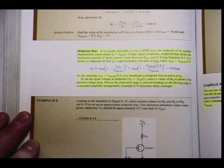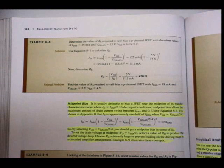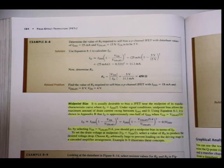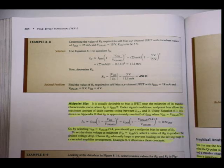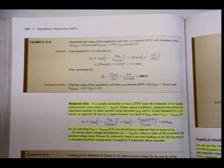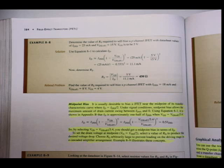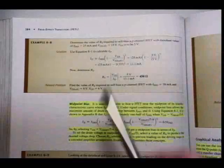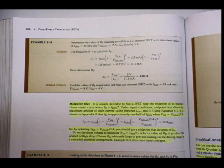The other method — example 8.8 — is to determine the value of RS required to self-bias a P channel JFET using datasheet values of IDSS equals 25 milliamps and VGS off equals 15 volts, where VGS is to be 5 volts. Make sure you know whether you're working with a P channel or an N channel so you draw the correct characteristic curve. In this case, calculate ID directly using equation 8.1, then determine RS. Five volts divided by 11.1 milliamps calculated gives approximately 450 ohms.